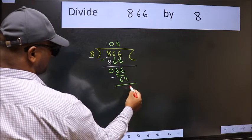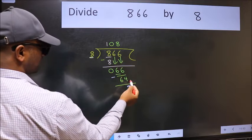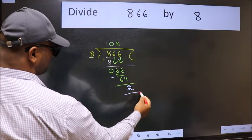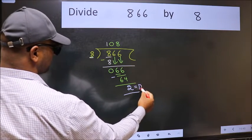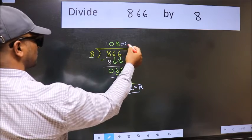We get 2. No more numbers to bring down, so we stop here. This is our remainder, and this is our quotient.